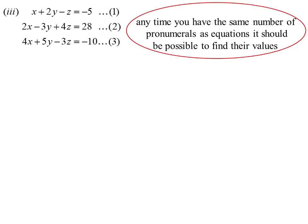It does not matter if we've got more than two pronumerals. We still use this idea. Any time we have the same number of pronumerals as we do equations, and assuming one of those equations is not just a straight multiple of one of the other ones. So we have three different equations. Then it should be possible to find the value of those pronumerals. A little bit of patience we can do it.